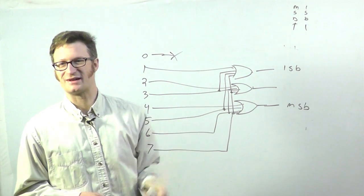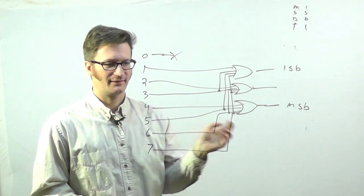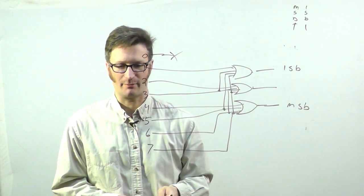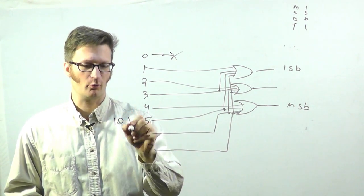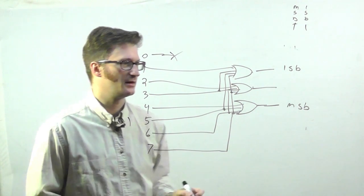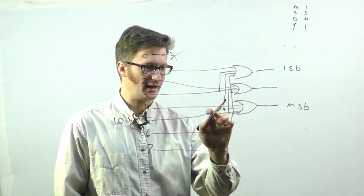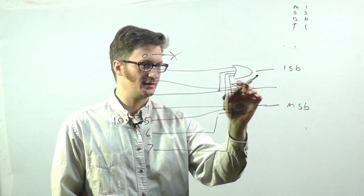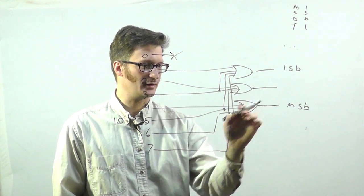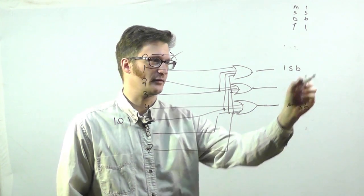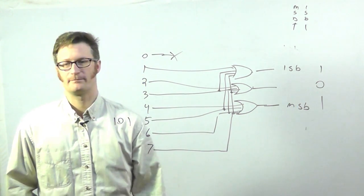It's starting to get a little messy and would look much nicer drawn in CAD. But let's verify: input 5 is represented by binary 1, 0, 1. So input 5 connects to the most significant bit output, does not connect to the middle bit, and connects to the least significant bit, giving us 1, 0, 1 on the output.